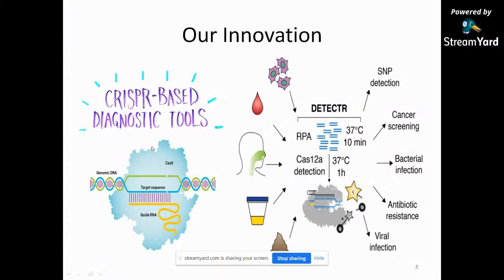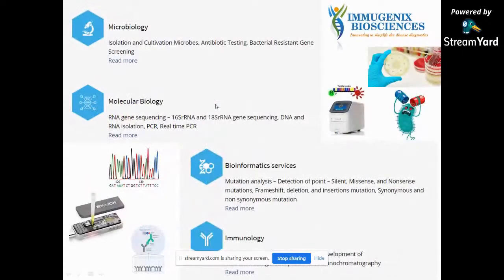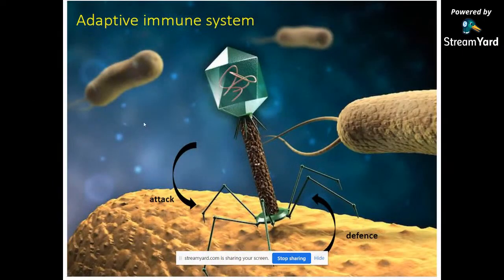We have expertise in microbiology, immunology, molecular biology, and bioinformatics. Putting all these together, we are developing innovative diagnostic tools for infectious disease — one of them being CRISPR. Currently we are working on CRISPR-based diagnostics for many infectious diseases, especially antimicrobial resistance and other pathogens. Apart from that, we also provide services to scientists, students, and others in the areas of microbiology, molecular biology, bioinformatics, and immunology, including NGS facilities.